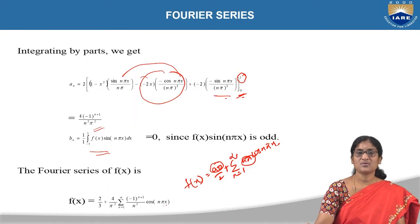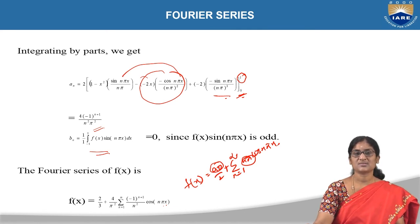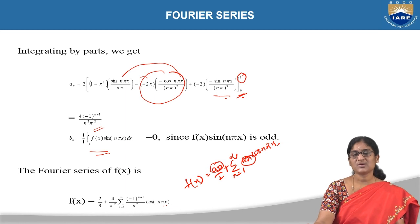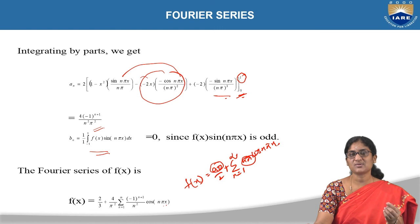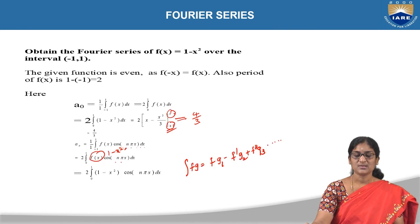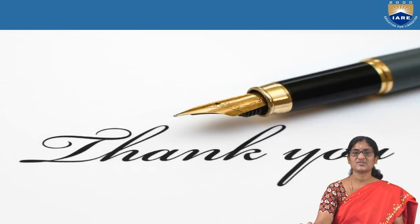It becomes very easy to find the Fourier coefficients if you know the function is even or odd, as it helps eliminate one coefficient. Even if you compute it by mistake, it will come out to be 0. To reduce solving time, it is better to check whether the function is even or odd by substituting x = −x. If you get back the original function it is even; if you get minus f(x) it is odd; otherwise all three Fourier coefficients must be computed. Thank you.